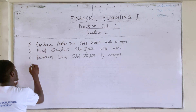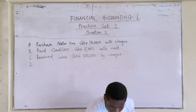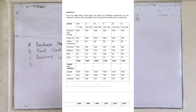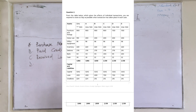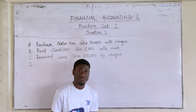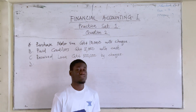Now we move to D. For D, furniture increased: it was 900,000 and went up — 1,150,000 minus 900,000 — so furniture increased by 250,000. Then bank also moved, decreasing from 344,000 to 94,000, which is also a decrease of 250,000. So the only changes here are furniture increased by 250,000 and bank decreased by 250,000.